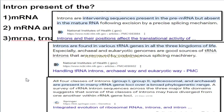A question asked where introns are present — in mRNA, tRNA, and ribosomal RNA. Introns are present in pre-mRNA but are absent from mature mRNA after the process of splicing, a post-transcriptional modification. Introns are also present in various tRNA genes and in all kinds of ribosomal RNA.